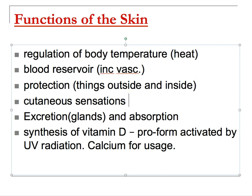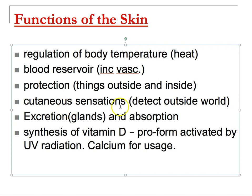Using the nerves we discussed, the skin can detect the outside world. Excretion occurs via glands that remove materials onto the surface of the body. Absorption is also possible: if a drug is lipid-soluble, it can be placed on the skin and delivered into the body — this is the mechanism by which smoking cessation patches work.